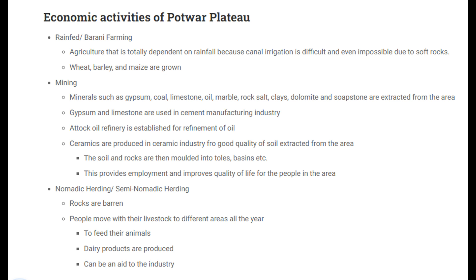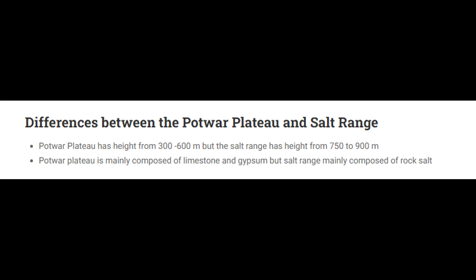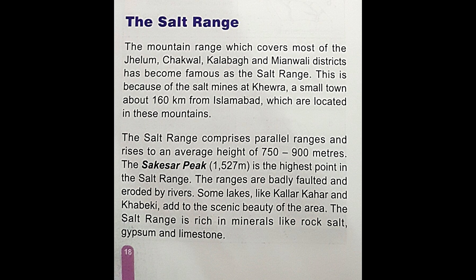Now, what is the difference between the Potohar plateau and the salt range? The Potohar plateau has a height from 300 to 600 meters, but the salt range has a height from 750 to 900 meters. The Potohar plateau is mainly composed of limestone and gypsum, but the salt range is mainly composed of rock salt.